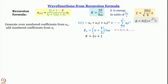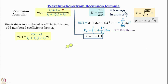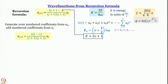Substituting k = 2v+1 into the recursion formula gives: aⱼ₊₂ = [2(j−v) / ((j+1)(j+2))] · aⱼ. The numerator simplifies to 2j−2v because 2j+1 minus (2v+1) = 2j−2v, which factors as 2(j−v).